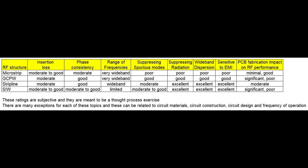The far right column is really important — it shows how much the circuit fabrication process can impact RF performance. MicroStrip is rated good, meaning there is minimal influence from PCB fabrication on its RF performance. Grounded Coplanar Waveguide is rated poor, as circuit fabrication has a significant influence. Stripline is moderate, and SIW is rated significant — and I'll show that in more detail in the next graphic.